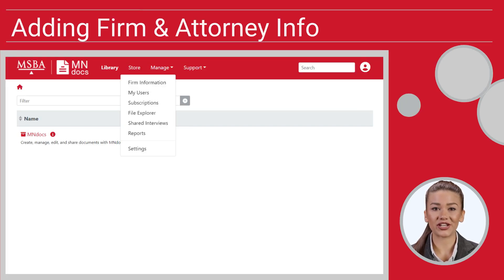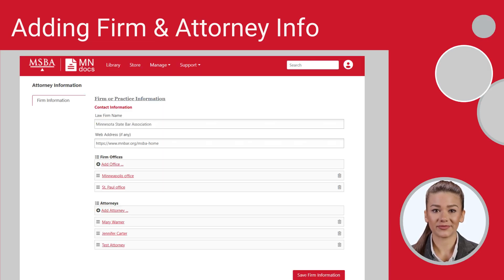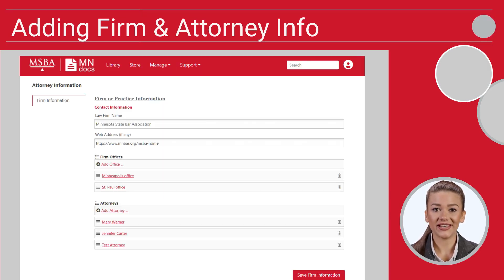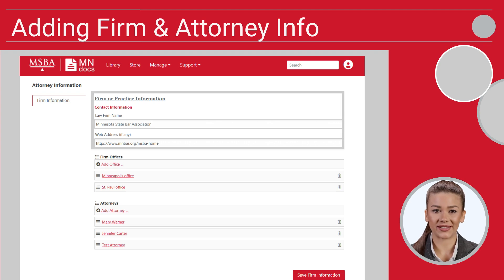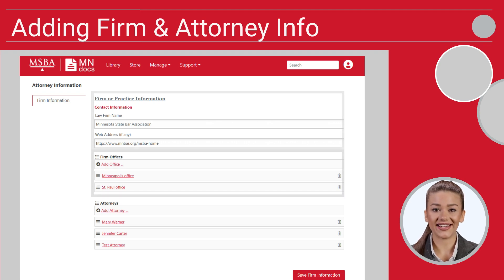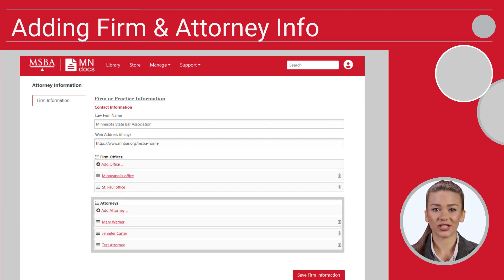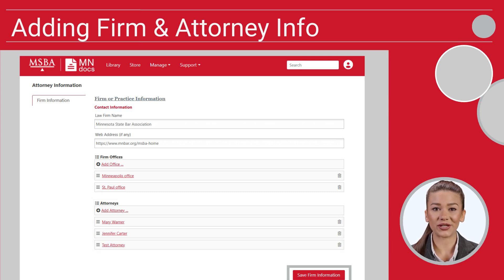To add firm and attorney information, navigate to the Manage tab and then select Firm Information. In the contact information section, enter your firm name and web address. Next, enter additional contact details including options for multiple office locations and multiple attorneys if needed. Once all of the information has been entered, click Save Firm Information at the bottom of the page.